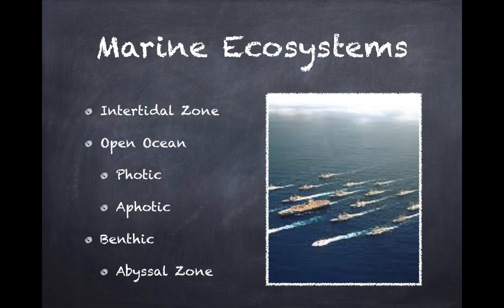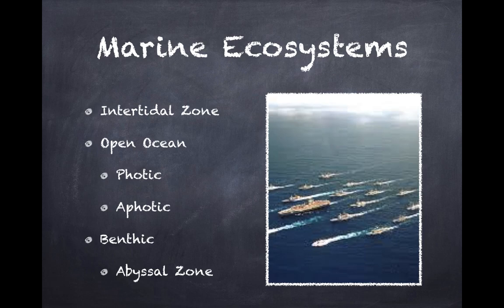Below the region that gets sunlight is the aphotic zone. Any organisms living in the aphotic zone depend on producers from the photic zone as the base of their food chains and food webs. The bottom of the ocean itself is referred to as the benthic zone, and for both the intertidal and open ocean, this applies. The deepest parts of the open ocean's benthic zone are called the abyssal zone.